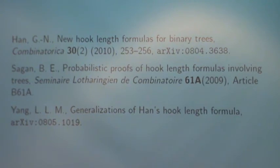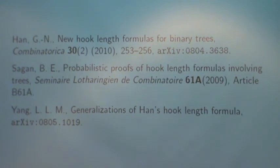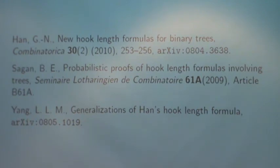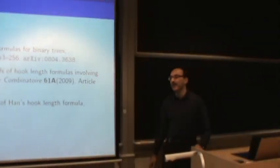So here are the main references for the results. Han's paper was the first, it was published a few months ago in Combinatorica. Sagan's paper appeared in Séminaire Lotharingien de Combinatoire. And Yang's paper I have not yet seen published, but it's on the archive. And I haven't had a chance to edit the paper yet to add Chen, Gao, and Duo's paper, which just appeared on the archive last week.